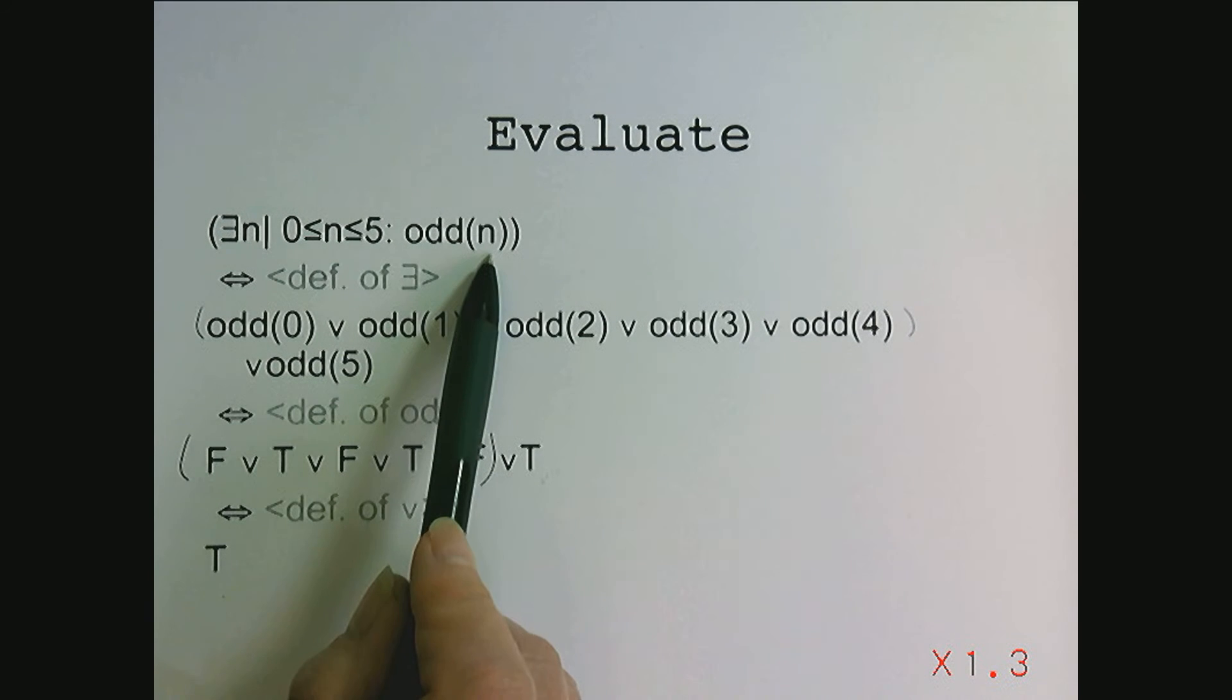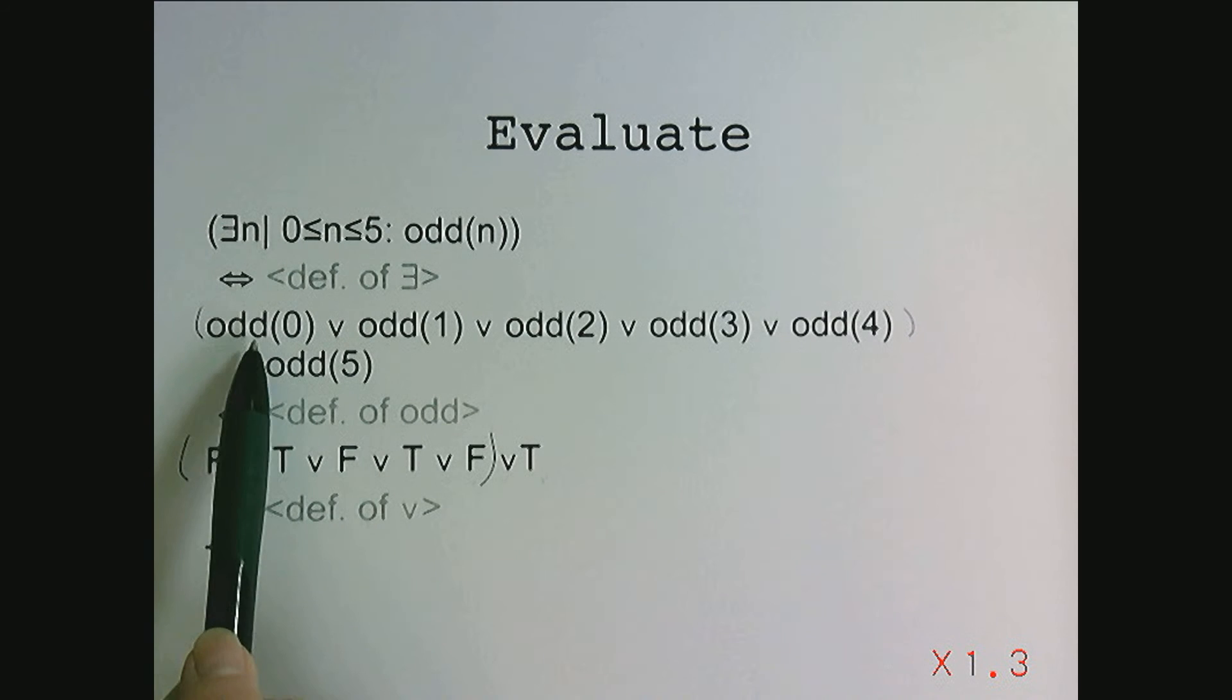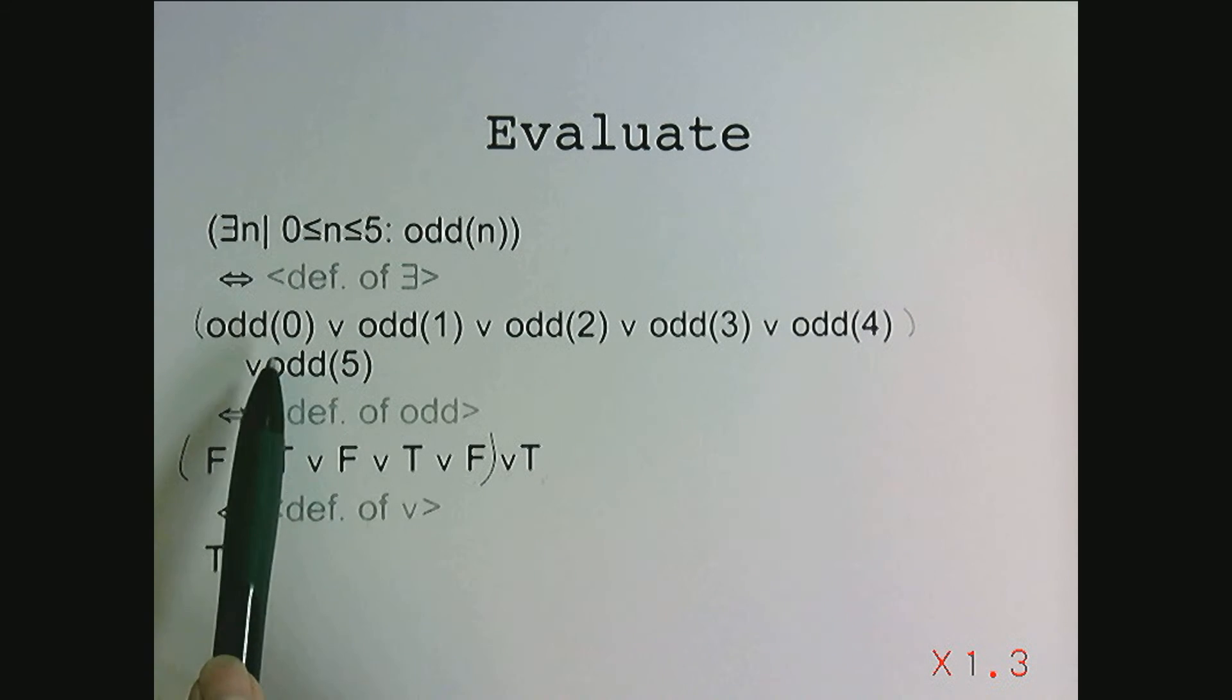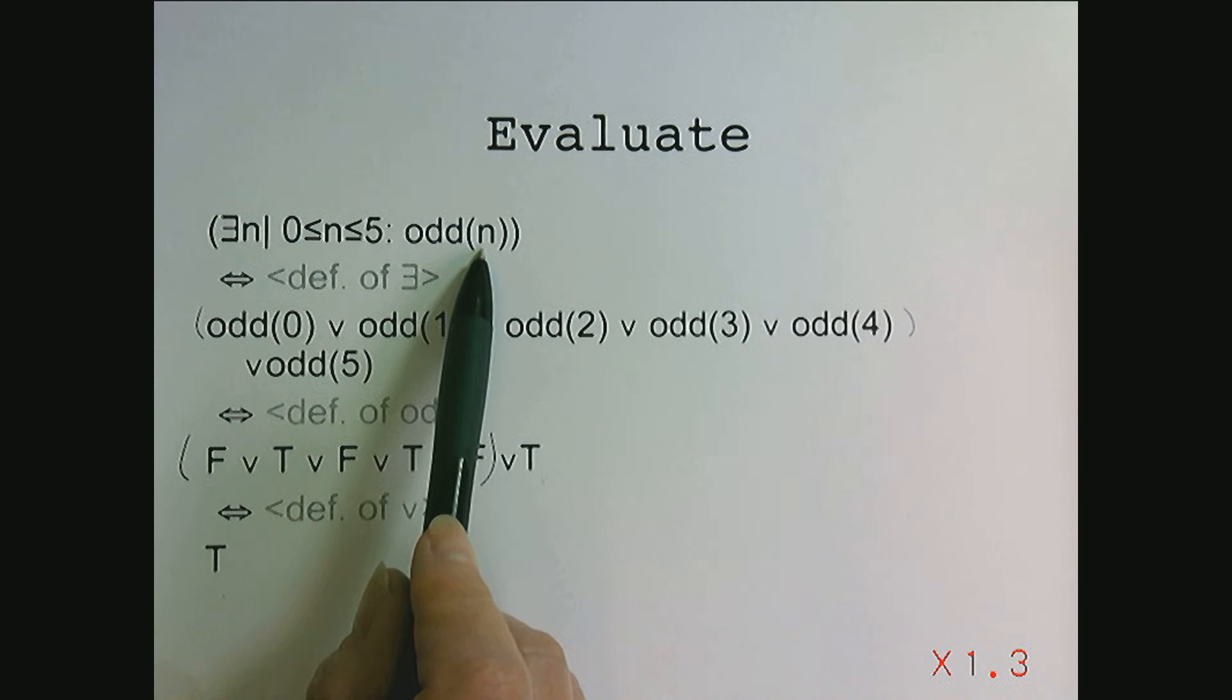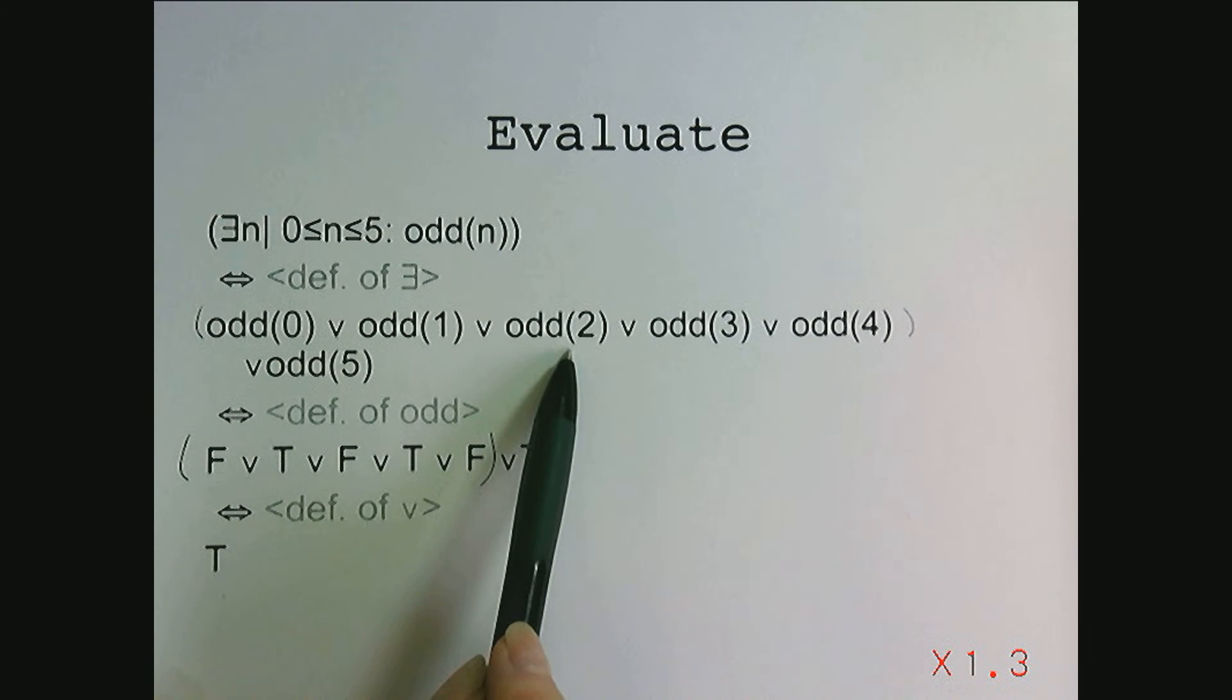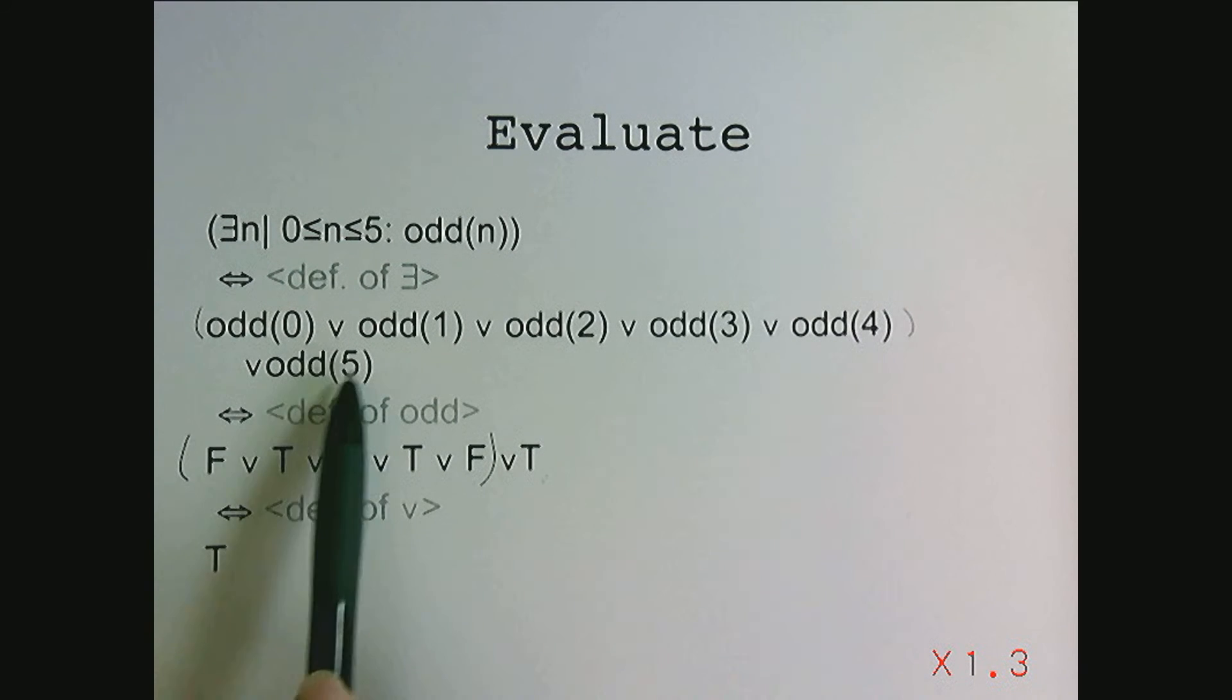If I wanted to evaluate this, one way I could do it is to list out all of the sub-predicates it involves. So this actually means either 0's odd or 1's odd or 2's odd or 3's odd or 4's odd or 5's odd.